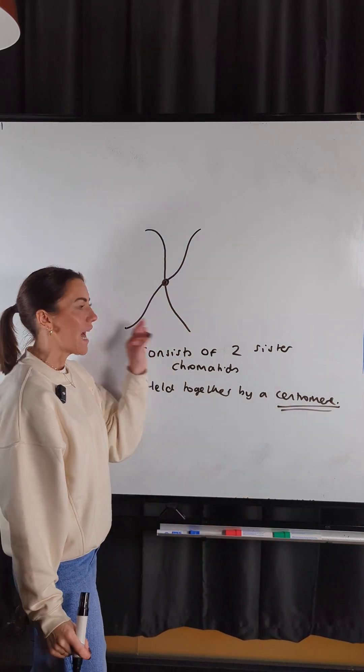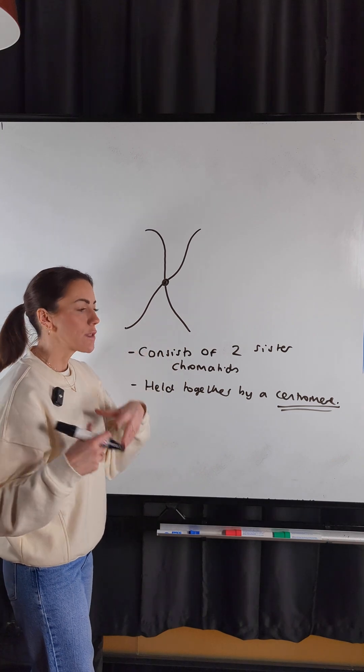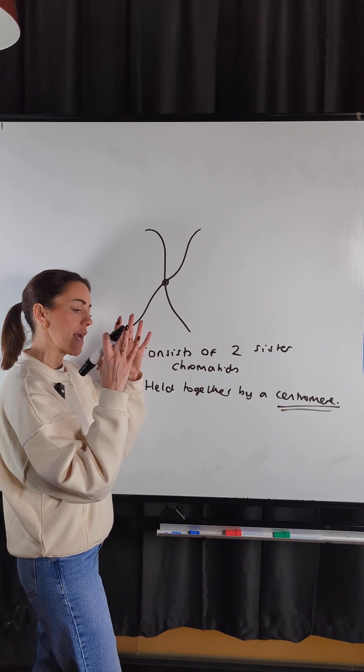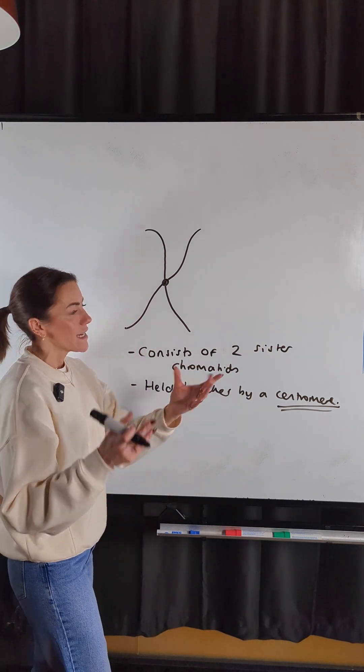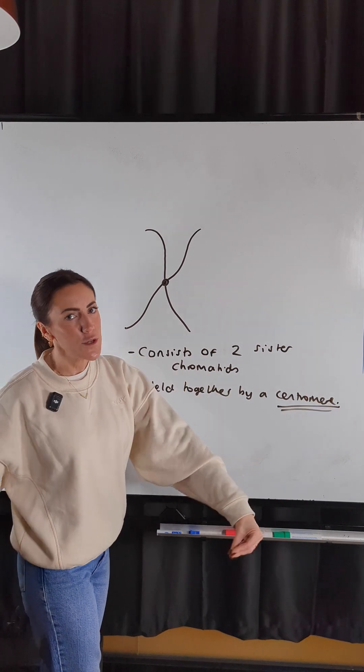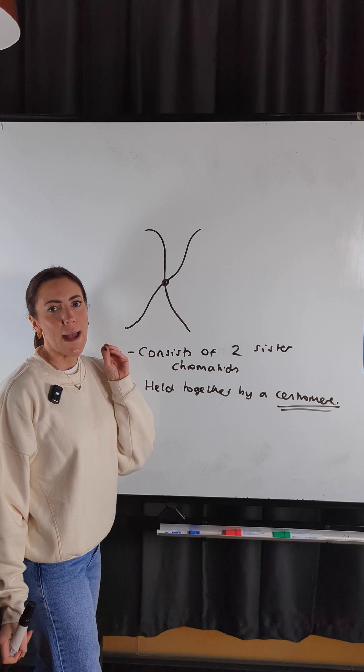And it's that centromere that will attach the chromosome to the spindle fibre, so it can be moved to the equator of the cell. And then the centromere will split so we can separate those two sister chromatids during mitosis.